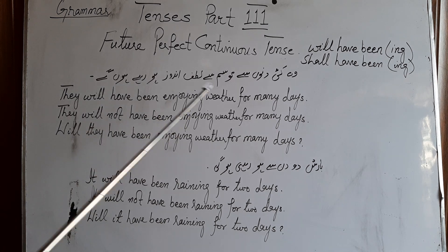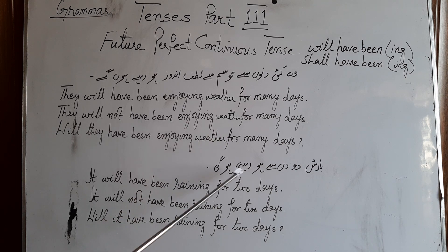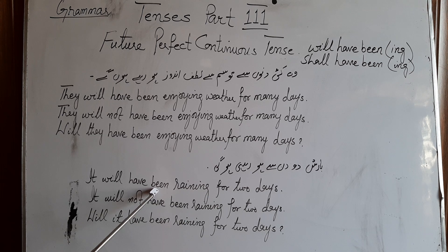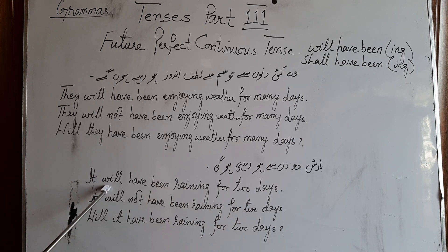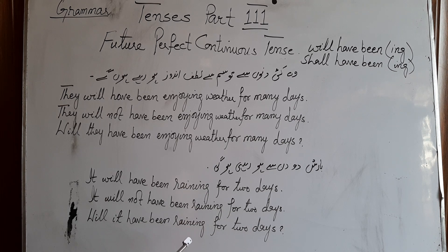They will not have been enjoying weather for many days. Will they have been enjoying weather for many days? کیا وہ کئی دنوں سے بارش سے لطف اندوز ہو رہے ہوں گے؟ بارش دو دن سے ہو رہی ہوگی یعنی دو دن پہلے شروع ہوگی — it will have been raining for two days. بارش دو دن سے نہیں ہو رہی ہوگی — it will not have been raining for two days. کیا بارش دو دن سے ہو رہی ہوگی؟